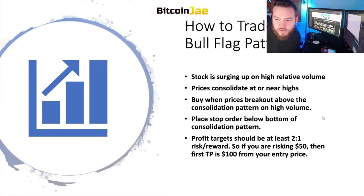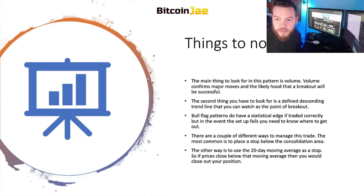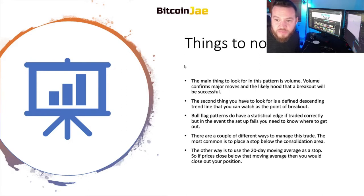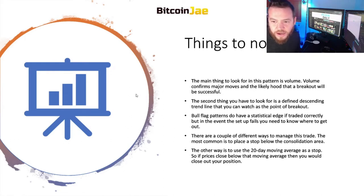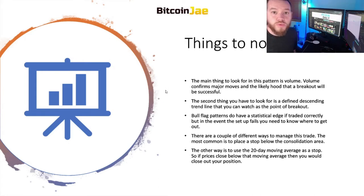Your profit targets should always be at a minimum of a two-to-one risk-reward ratio. So if you're risking fifty dollars, your first take profit should be a hundred dollars from your entry price — that's how you become a profitable trader. The main thing to look for in this pattern is volume. Volume confirms major moves and the likelihood that a breakout will be successful. If you see a breakout with no volume, that's usually going to be a fakeout and it'll drop right back down. The second thing to look for is a defined descending trend line to watch as the point of breakout.